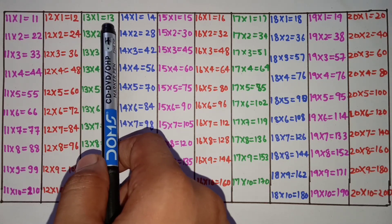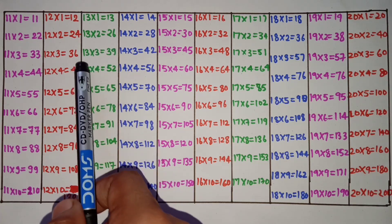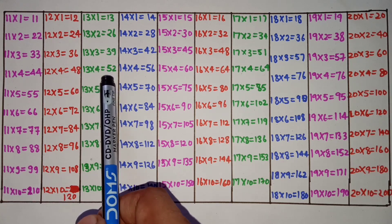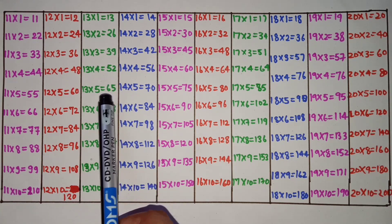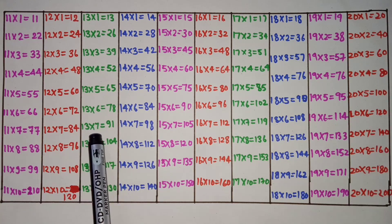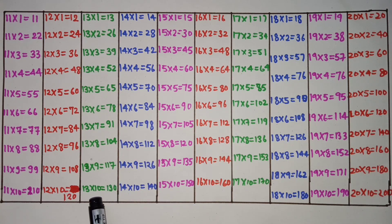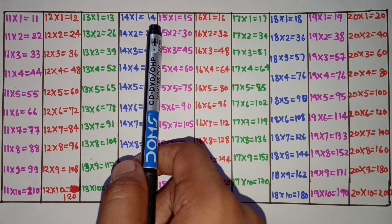13 ones are 13, 13 twos are 26, 13 threes are 39, 13 fours are 52, 13 fives are 65, 13 sixes are 78, 13 sevens are 98, 13 eights are 104, 13 nines are 117, 13 tens are 130.